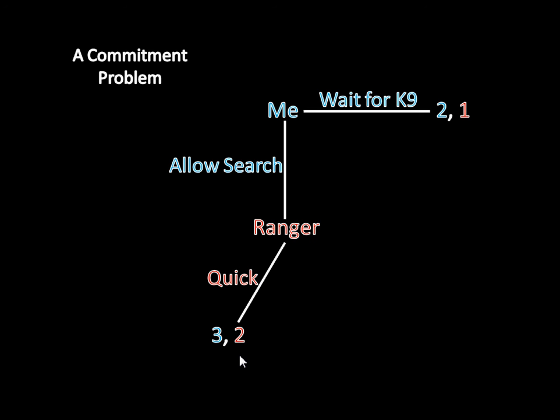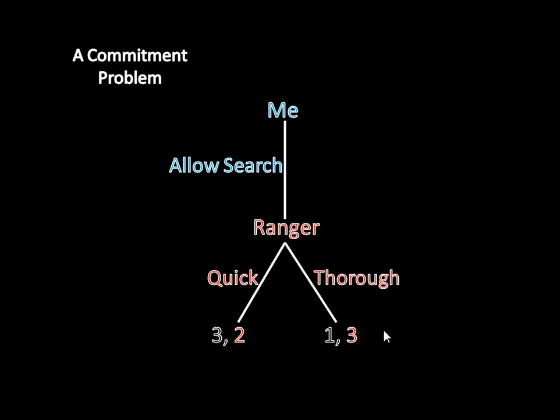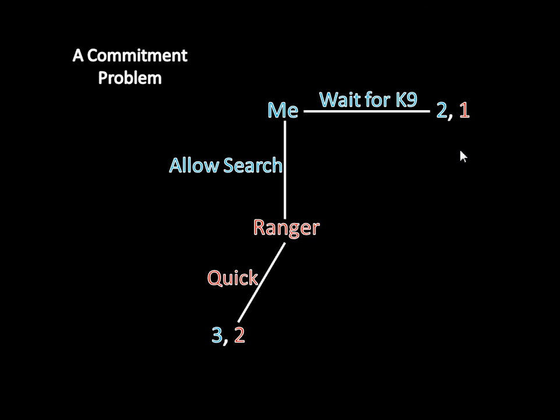That's the idea of a commitment problem in game theory: we can end up at bad outcomes despite the fact that neither player really likes them, and we would both prefer a different outcome. In an ideal world, the ranger would credibly commit to conducting only a quick search — if he could obligate himself under the law to stick to that quick search, we'd get to the better outcome. But he can't credibly commit to this, and so we end up at the inefficient outcome. The moral of the story: you should only focus on what actors can credibly commit to do — and moreover, you just shouldn't let police officers search your vehicle under any circumstances. I hope you understand commitment problems, and join me later when we look at something else regarding backward induction and subgame perfection.